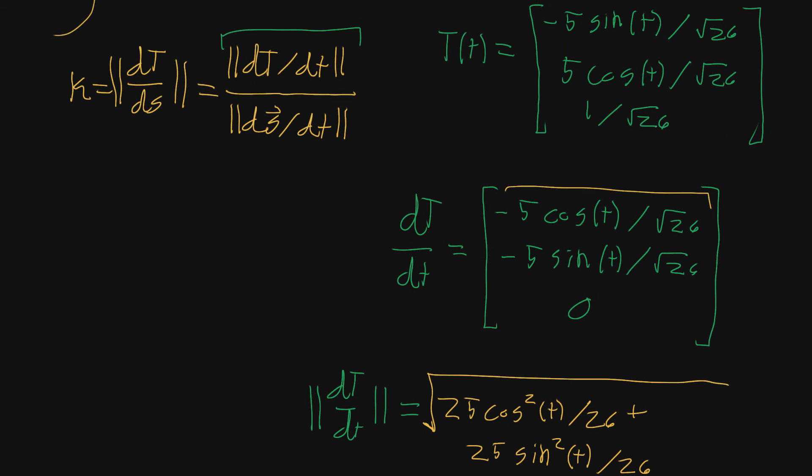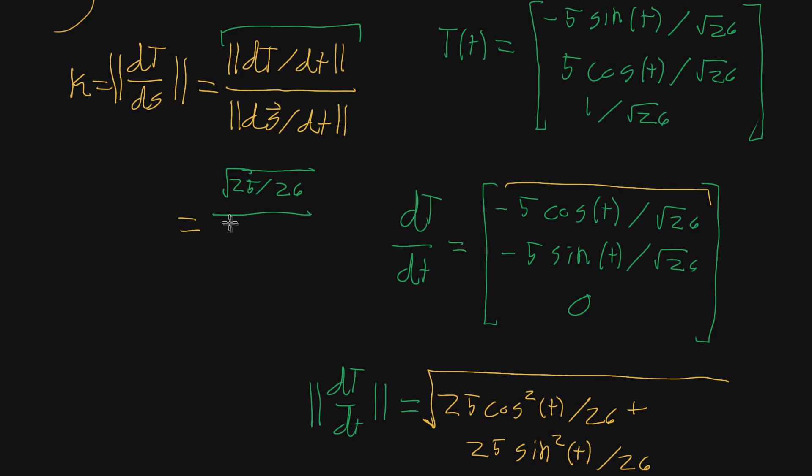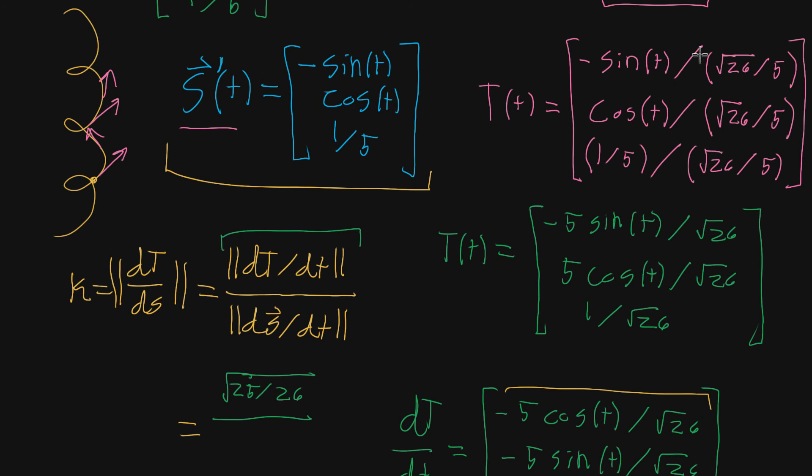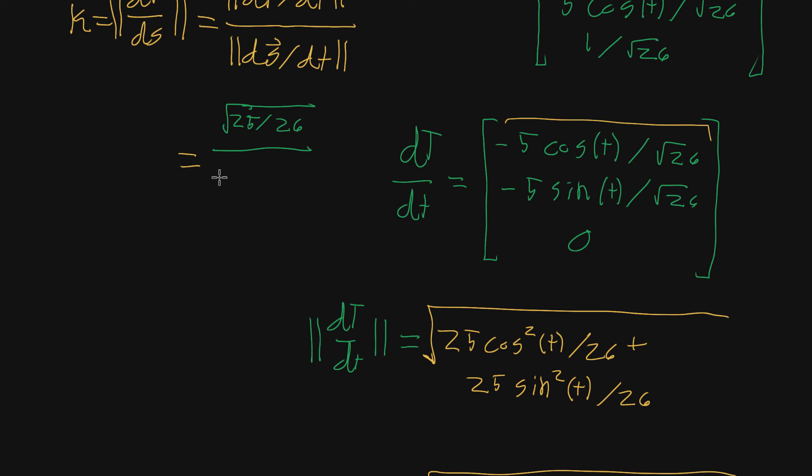So for our curvature equation, we go up and we can start plugging that in. We just found that numerator and found that it was the square root of 25 divided by 26. And we already found the magnitude of the derivative itself—that's one of the things we needed to do to find the tangent vector. That's where this 26 over 5 came from. I deleted it from where we did last video to make room, but if you look at the last video you can see where we got that square root of 26 divided by 5. And I'll actually write that as square root of 26 divided by 25, just putting the 5 back under the radical.